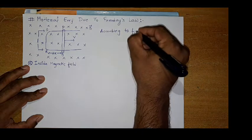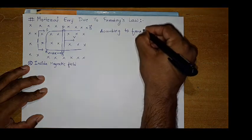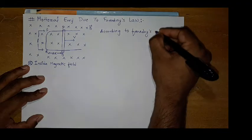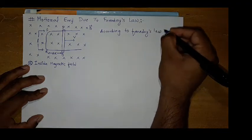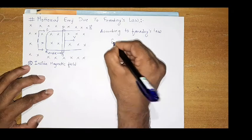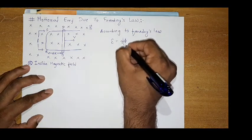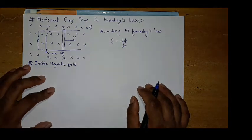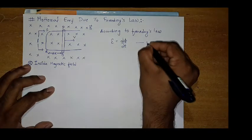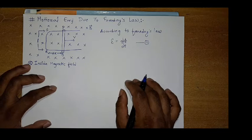According to Faraday's law, we can write epsilon is equal to d phi by dt. Let it be our equation 1.